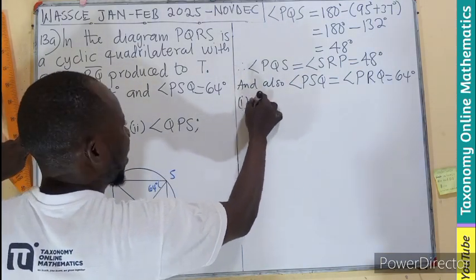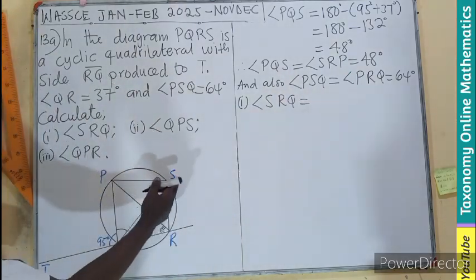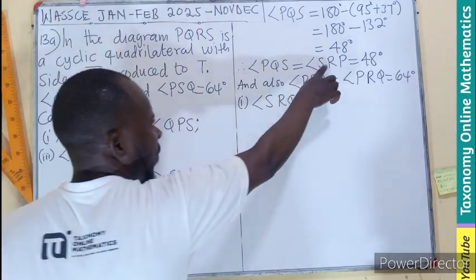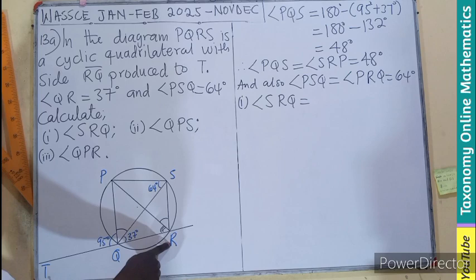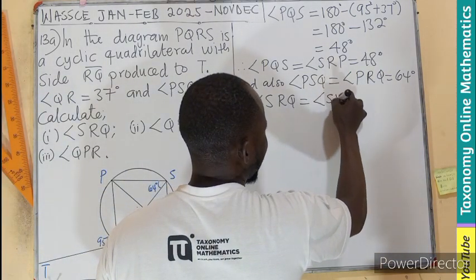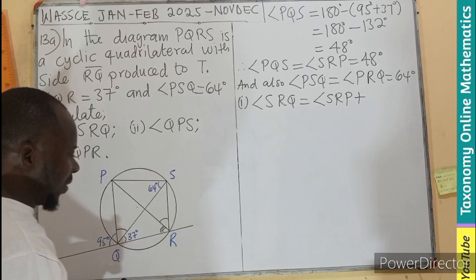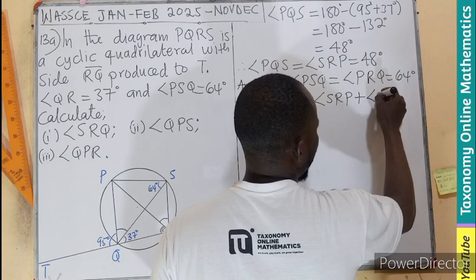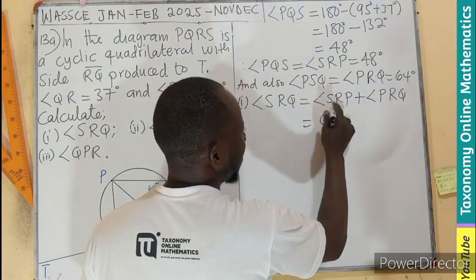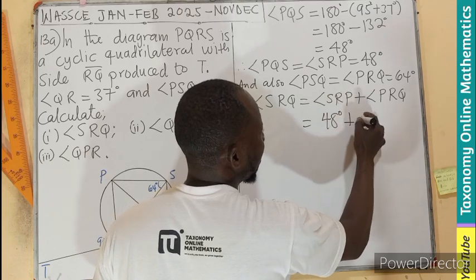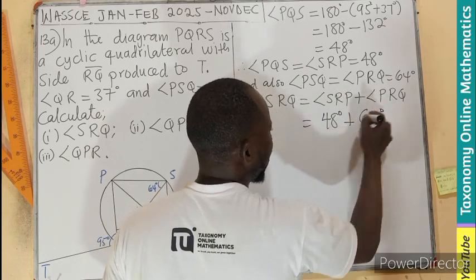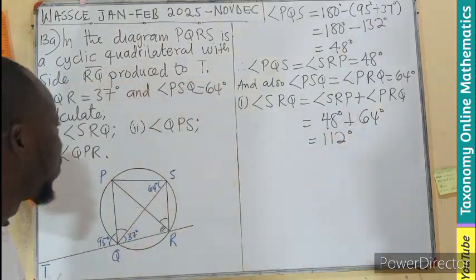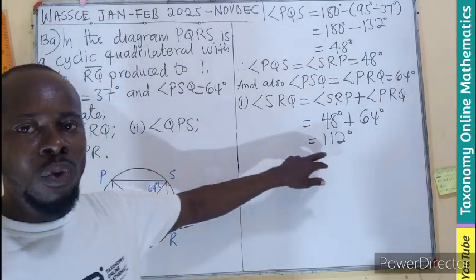Now that we know these two angles, we can easily find what we are asked to find: angle SRQ. This is the sum of the two, so I add SRP plus PRQ.